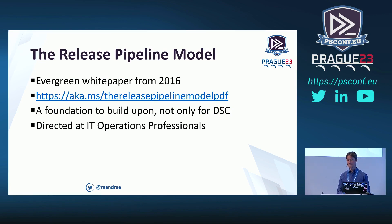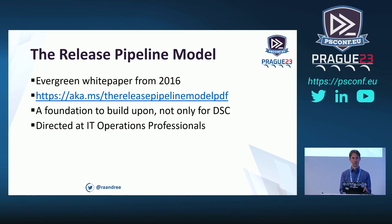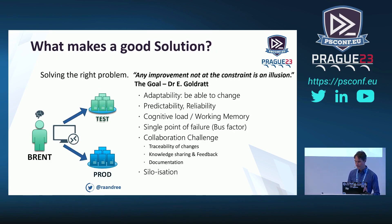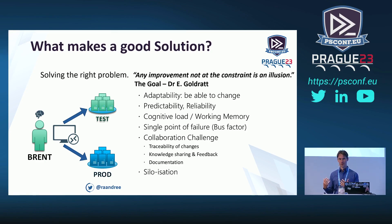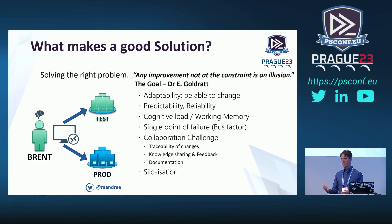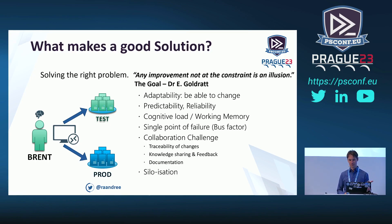If you're interested in the background, the Evergreen whitepaper — the Release Pipeline Model written by Steven Muranski and Michael Greene back in 2016 — is still very up to date, and most customers unfortunately still don't implement the ideas of having a release pipeline for managing infrastructure. The key statement is: any improvement not of the constraint is an illusion. We need to tackle the problem — and we are the problem, because we are humans and we make mistakes. Automation must ensure that what we want in our environments is exactly what we expect.